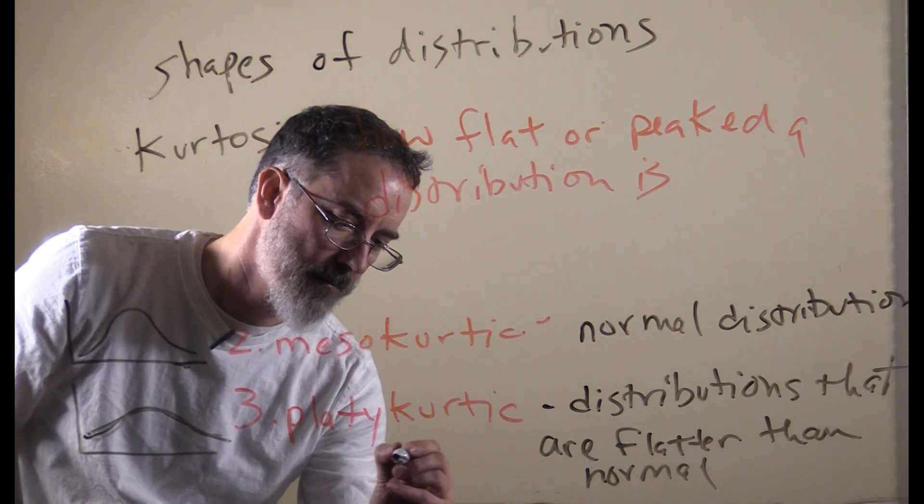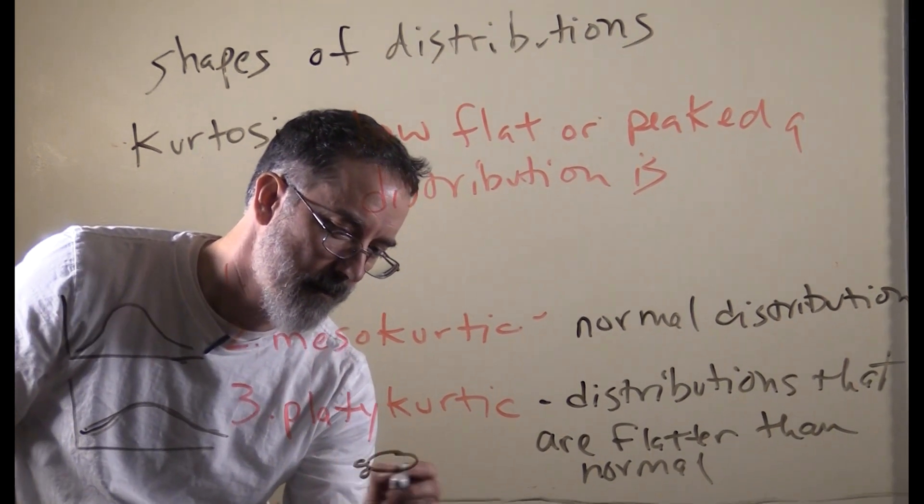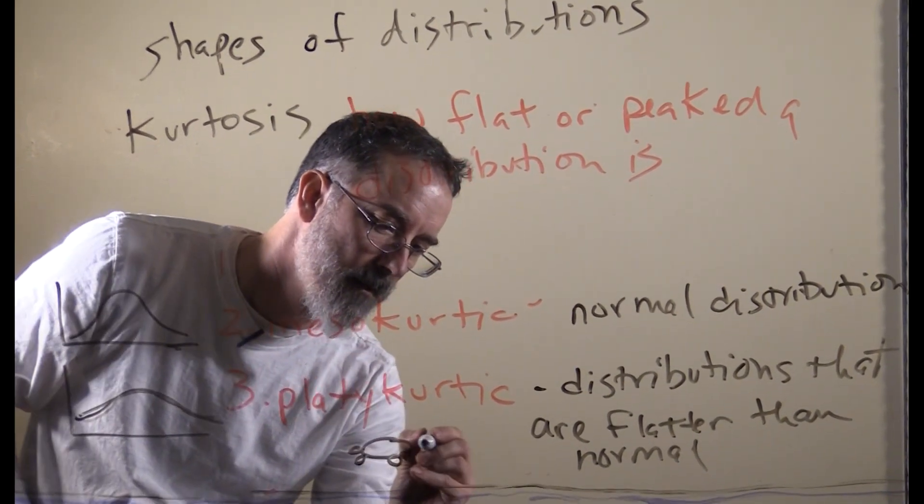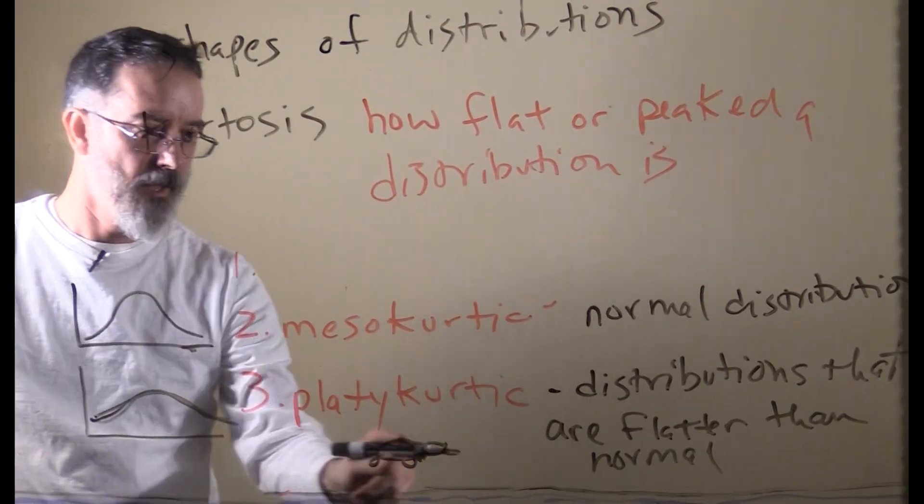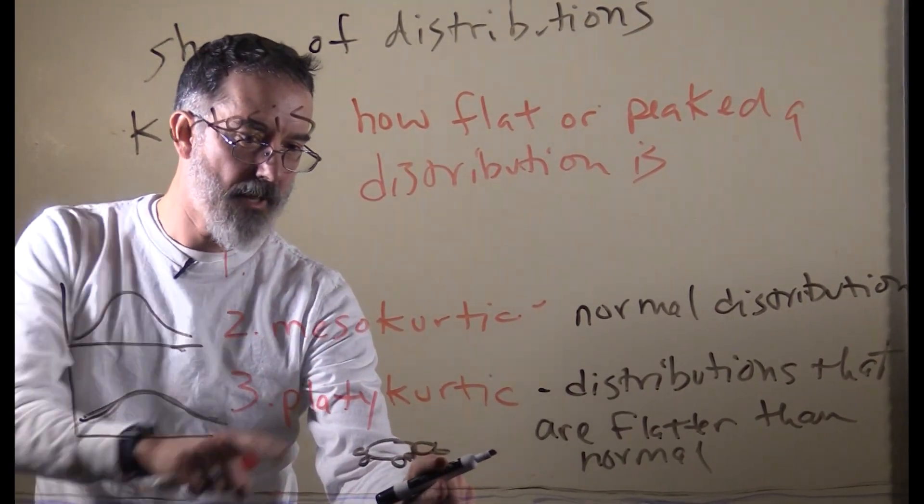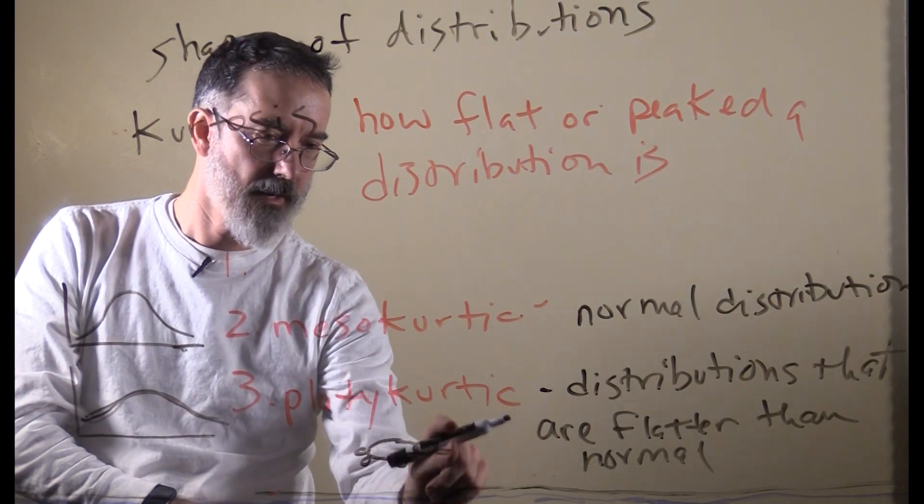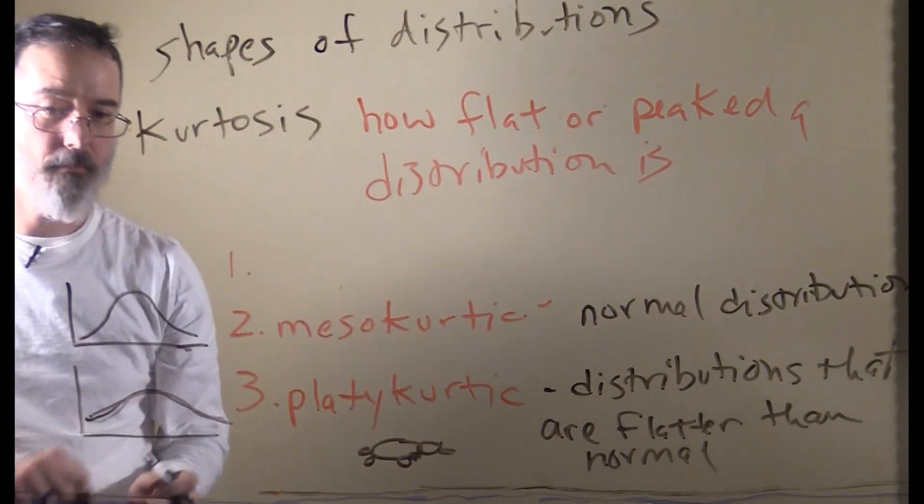In Australia, there is this little animal that looks exactly like this called a platypus. It is a platypus because it has got a flat bill. Platy means flat. So this is the kind of kurtosis that is flat like a platypus's bill.